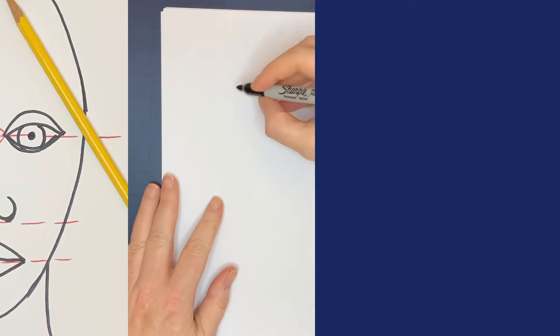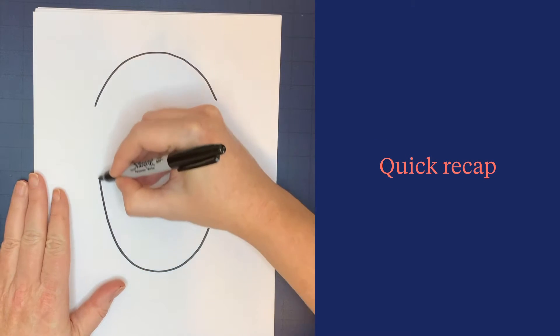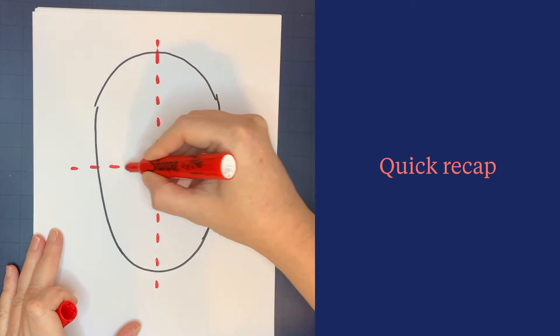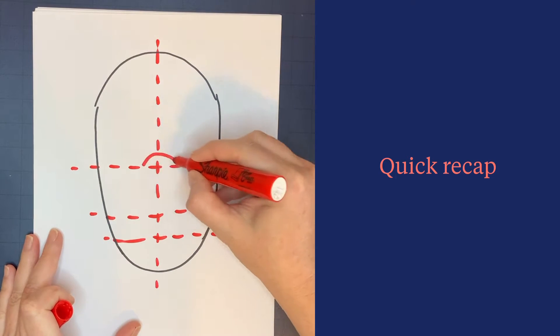This is a quick recap for people who were gone last time. Draw an upside-down egg shape, then draw guidelines straight down the middle and straight across the middle three times. These guidelines will be erased later.